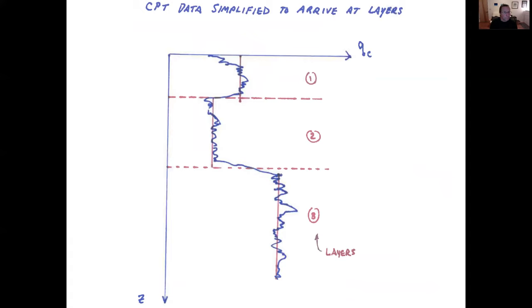CPT data can be simplified to arrive at layers. Now it looks something like this. And I'm just showing an example where there's some rather abrupt breaks in the soil types and you can see very clearly that there would in fact be three divisions in this graphic. Layer one, layer two, layer three, and this is for the cone tip resistance Q sub C with depth. So it would look something like that.